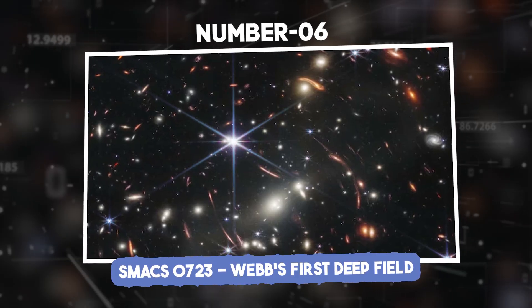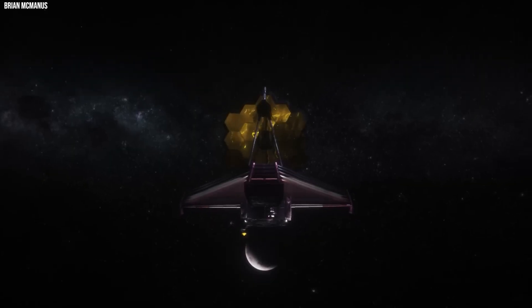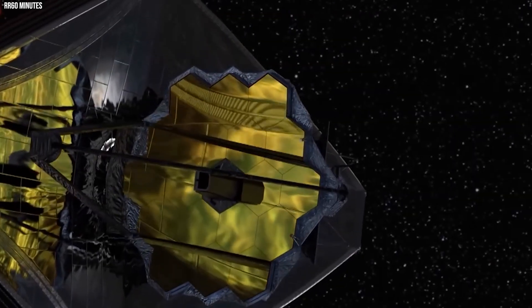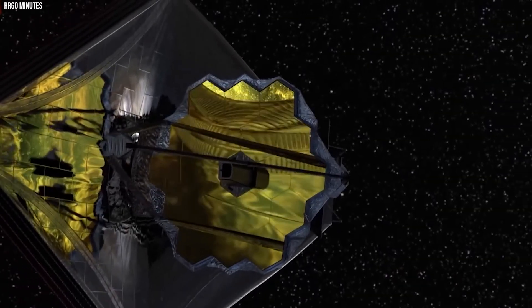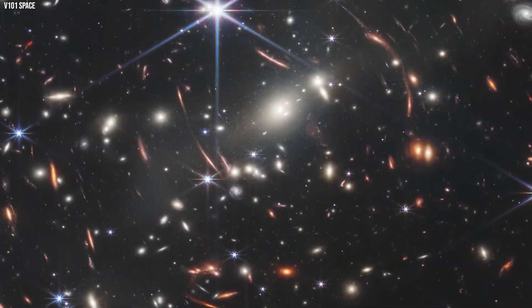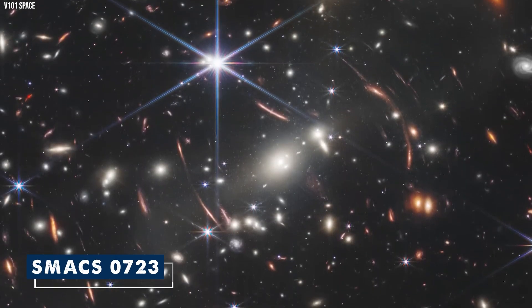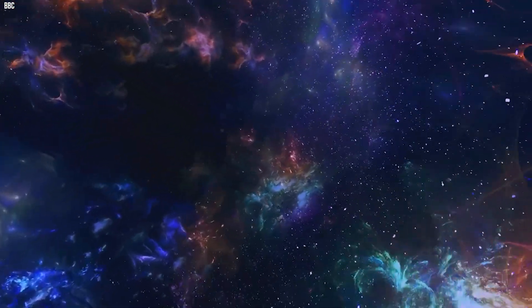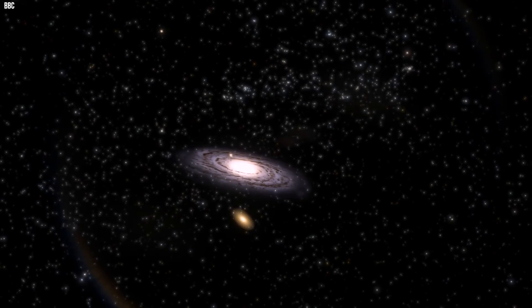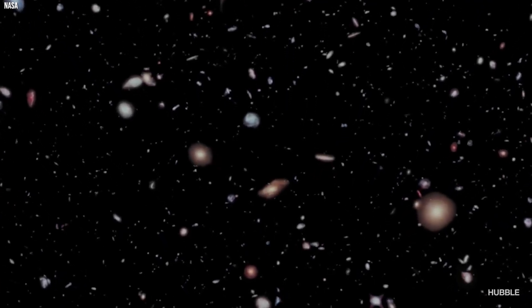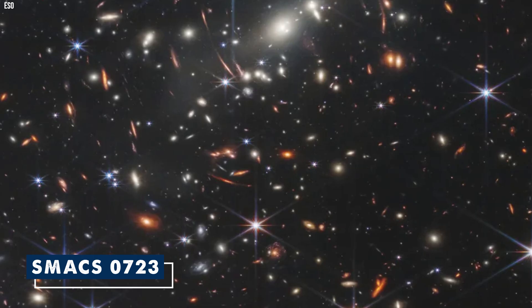S-MAX 0723. Webb's First Deep Field. James Webb Space Telescope from NASA has just given us an amazing peek into the farthest corners of space. It's like a super-powered camera taking pictures in a special way called infrared. This incredible picture is called Webb's First Deep Field, and it's all about a group of galaxies known as S-MAX 0723. This cluster is like a bustling cosmic city filled with thousands of galaxies, even the faintest ones ever seen in infrared light.